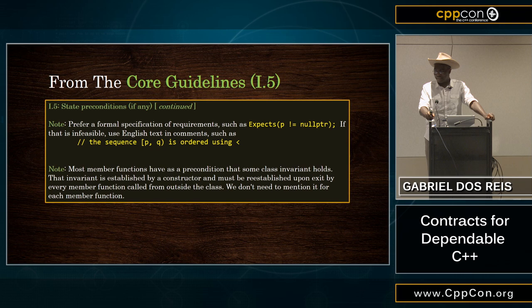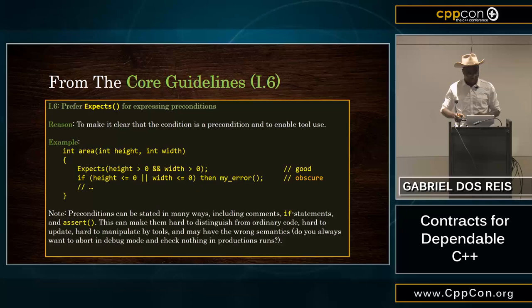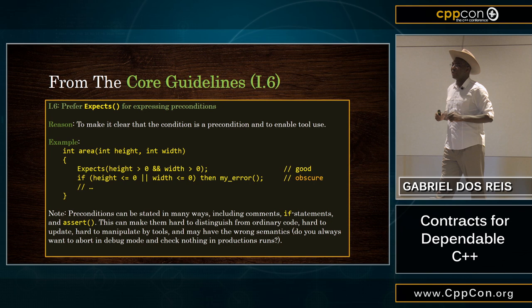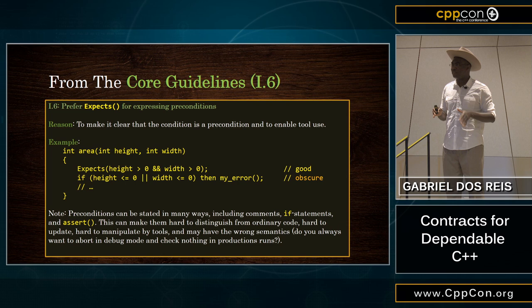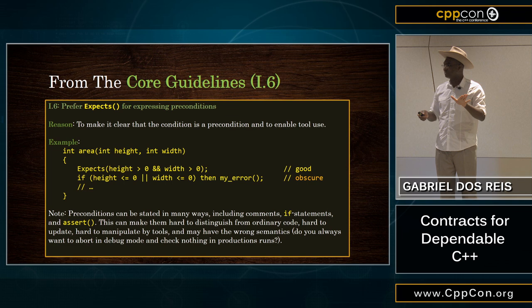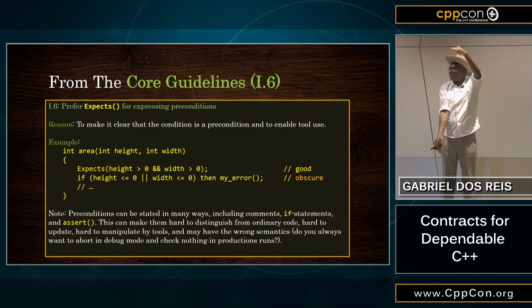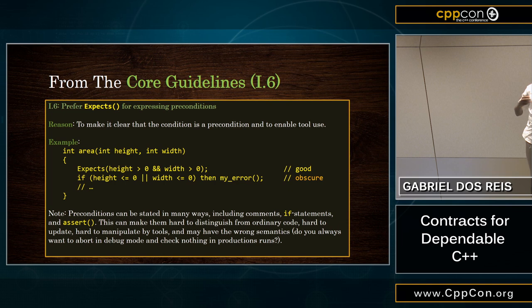What else do we get from the guidelines? I-6. The guideline says: prefer expect to state preconditions. If you don't have the expect from the GSL, normally what you'll do is manually test your condition and then either raise an exception or call abort or something to that effect. When you do that, you've taken a very high-level recognizable idea and turned it into very low-level code that is very hard to recognize as a precondition, and also very hard for tools to recognize and do their job. That's why we want you to use the expect macro.